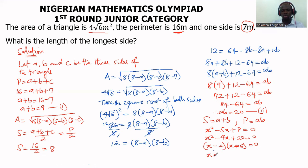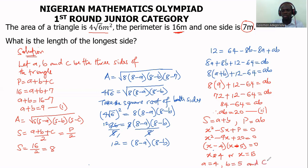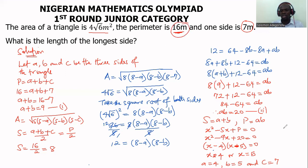So x equals 4 or x equals 5. The three sides of the triangle are A equals 4, B equals 5, and C equals 7. We can confirm this by checking the perimeter: A plus B plus C equals 4 plus 5 plus 7. Four plus five is nine, and nine plus seven gives us 16, which is the perimeter. This confirms the solution.